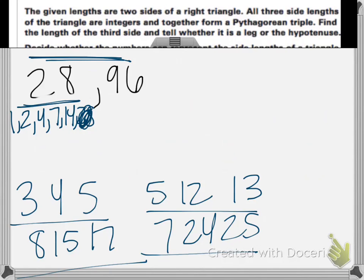14 does not go into 96 evenly, so that's not going to be our greatest common divisor. 7 does not go into 96 evenly, so that won't be our greatest common divisor. And I'm just checking these with my calculator. And then 4 does actually go into 96 evenly. So we'll divide both our numbers by 4, and we'll get 7 and 24.